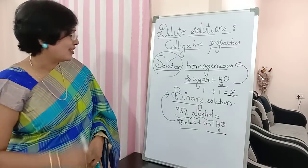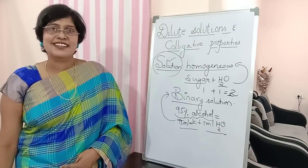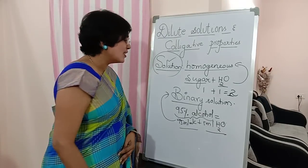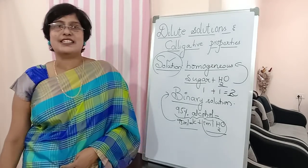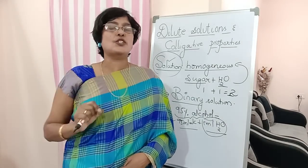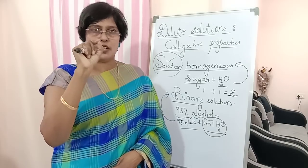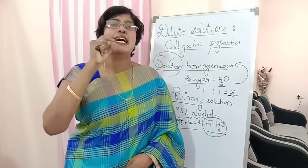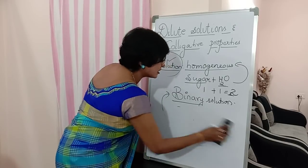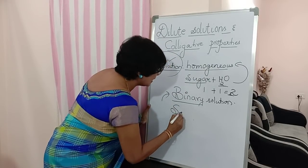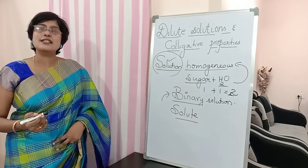What is the difference between the two components in all these solutions? The difference is: one component is in smaller quantities and the other is in larger quantities. We have taken one spoon of salt or sugar and one full glass of water. The component taken in smaller quantities is called the solute — S-O-L-U-T-E.